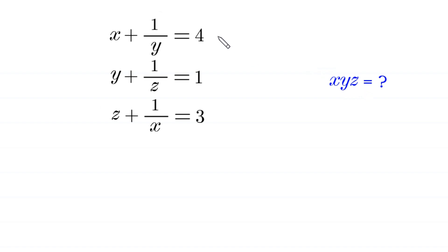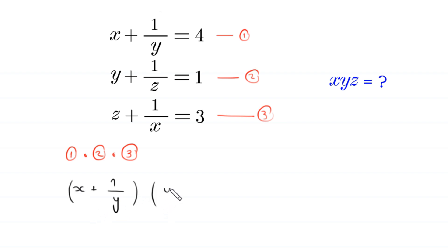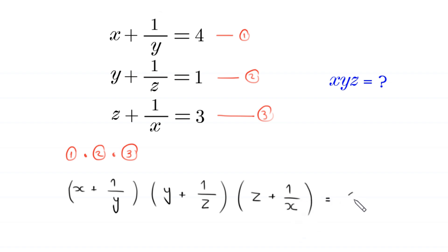Let us start. We call this equation 1, this equation 2, and this equation 3. And we multiply all three equations together: equation 1 times equation 2 times equation 3. This becomes (x + 1/y)(y + 1/z)(z + 1/x) is equal to 4 times 1 times 3.